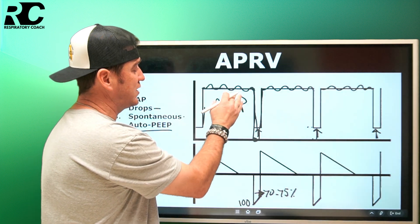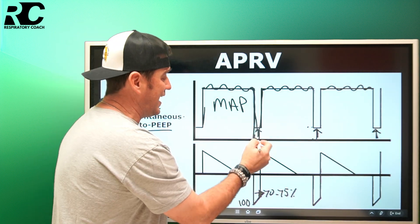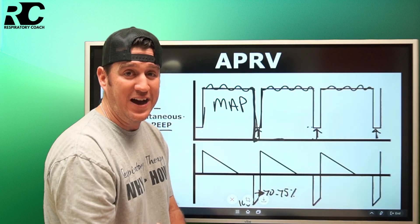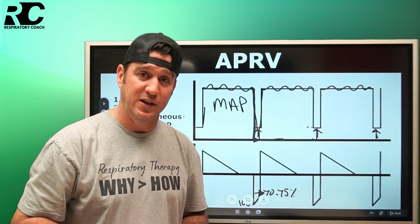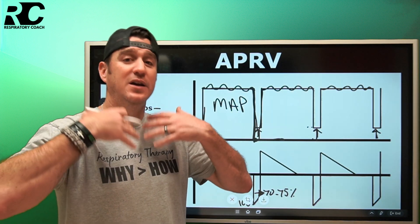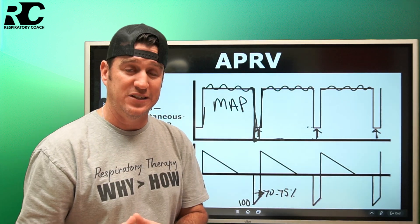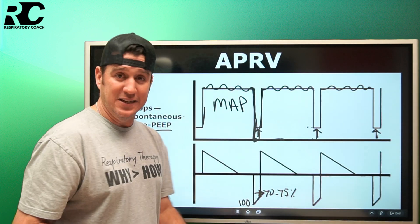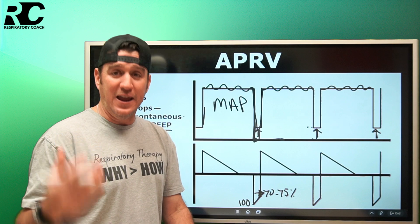But this is all intentional. We want to trap because what we don't want to do is recruit, recruit, recruit, recruit and then go all the way down here and be at zero for too long. Then what we find is that now we're de-recruiting. So we want enough time for that bulk CO2 removal but not enough time for alveolar collapse. And that is why we intentionally air trap.